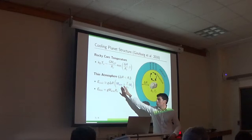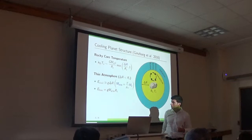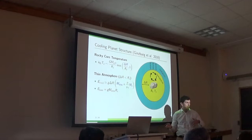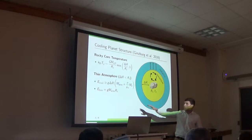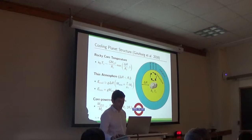So in this thin atmosphere regime, we can write down the energy, the heat capacity of the cooling planet. So we have this term which is due to the thermal and gravitational energy of the atmosphere. And now we also have this term which is the thermal energy of the rocky core, simply by substituting this temperature. And you can see that we have the ratio of the molecular weights of the atmosphere to that of the core, because what determines the heat capacity is the number of particles.